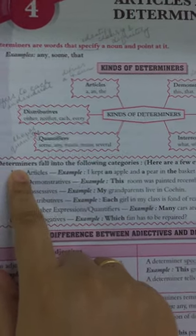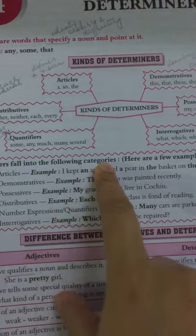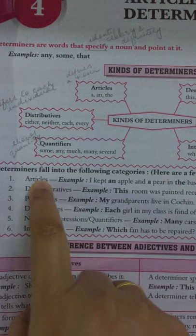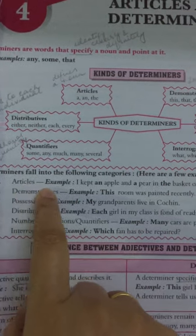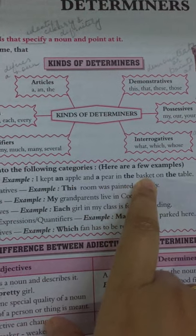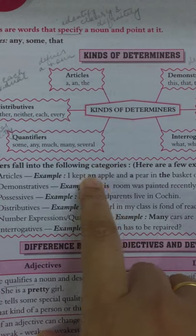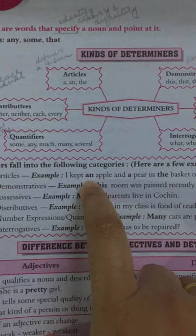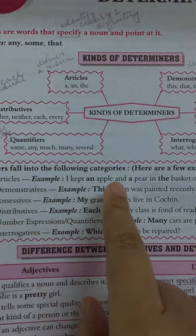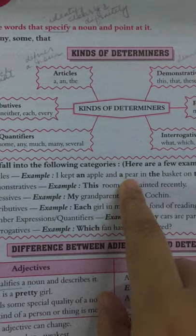Now let us look at examples of each category. For articles: I kept an apple and a pear in the basket on the table. Here 'an' defines one apple and 'a' defines one pear — they are articles defining the nouns.